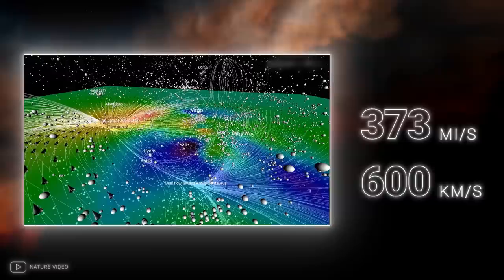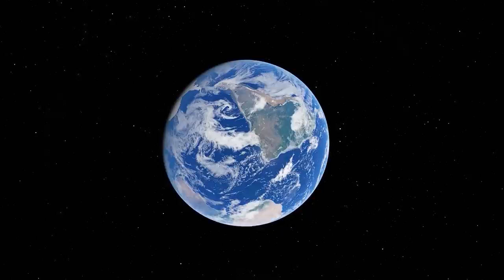As a result, the Local Group is pulled towards the Great Attractor at a speed of about 373 miles per second.